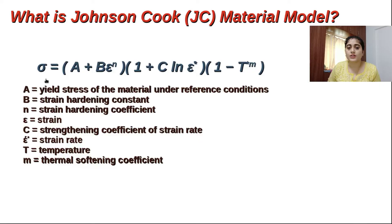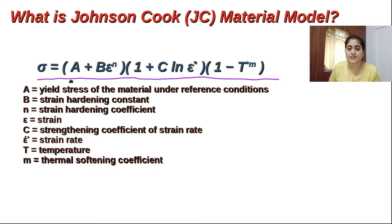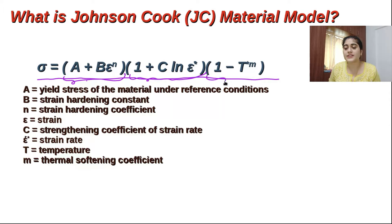This is called the Johnson's Cook material model. This model has three brackets. The first bracket shows the strain effect of the material. The second bracket shows the strain rate effect, and the third bracket shows the temperature effect on the material. So it gives the coupled effect of these three.